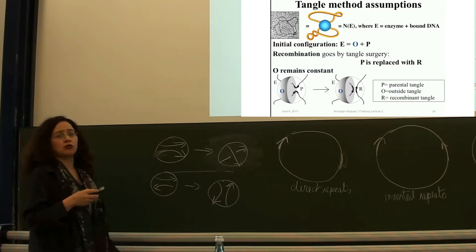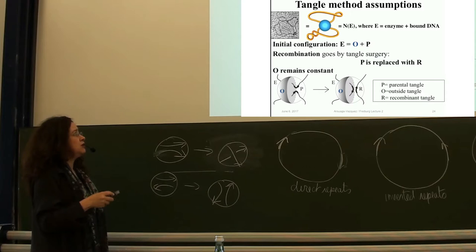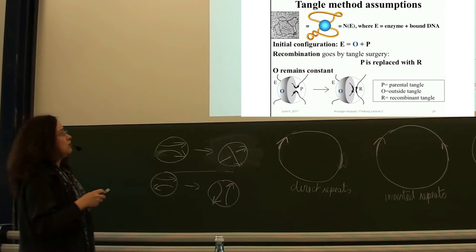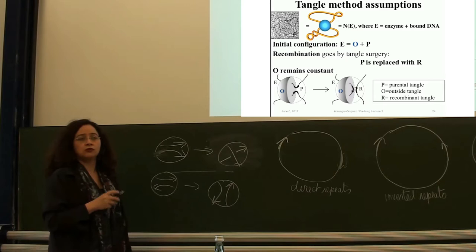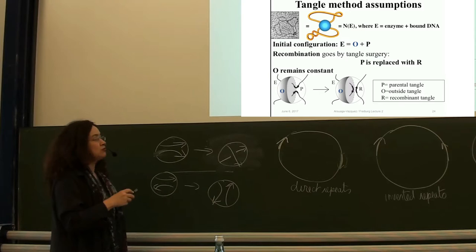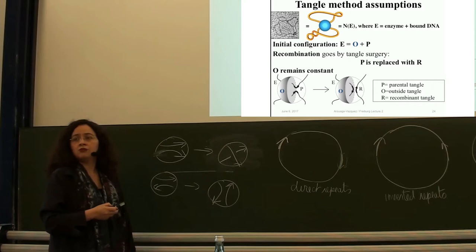The next big assumption is that P is replaced with R. Site-specific recombination is modeled as tangle surgery: P is called the parental tangle, R is called the recombinant tangle, and O is called the outside tangle. We can make assumptions based on the biology so that P and R are very simple — like those shown in the picture. Then everything that is left is to understand the tangle O, to understand the mechanism of the enzyme.